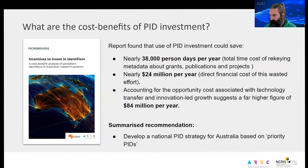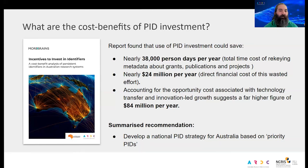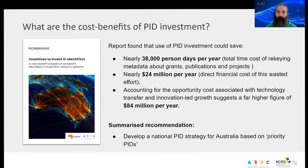That saving, valued at about 24 million Australian dollars a year, comes purely from avoiding duplicate data entry — all those times you've typed information about a journal article or a researcher that could have been drawn in automatically from another system. And if that 24 million dollars were reinvested back into research, Australia would realize a benefit of about 84 million dollars a year to the economy. That is not a small amount of money.